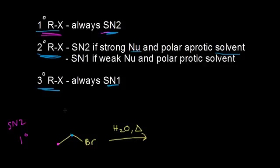The nucleophile here is water, which is also the solvent, making this a solvolysis reaction. That might confuse some people because water is a relatively weak nucleophile and it's polar protic — conditions that normally favor SN1. However, the structure of your alkyl halide always wins. This is a polar protic solvent which does favor SN1, but since this is a primary alkyl halide, it's only going to react via an SN2 mechanism, although this reaction does occur rather slowly.